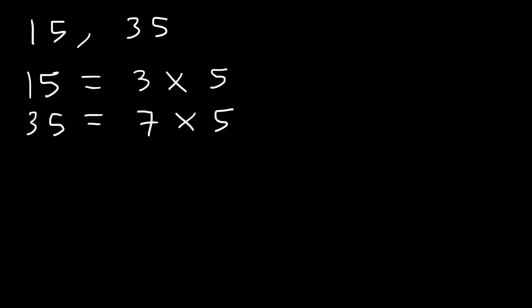Now, once you have the prime factorization of each number, notice the common prime numbers that are present. So, 5 goes into 15 and 35. It's a common factor because it's found in both numbers, and it's the greatest of all the common factors. So, it's called the GCF, the greatest common factor. The GCF of 15 and 35 is 5.